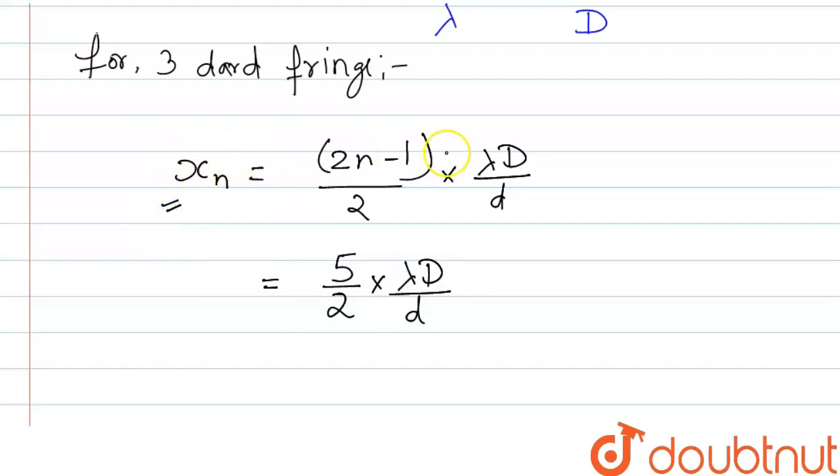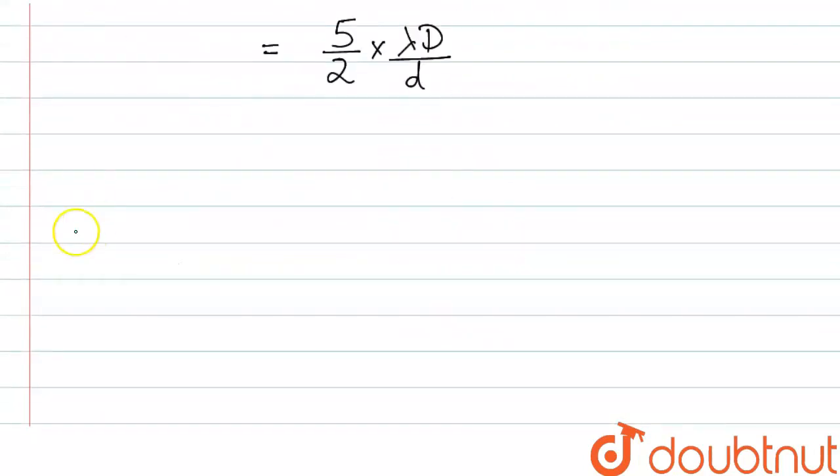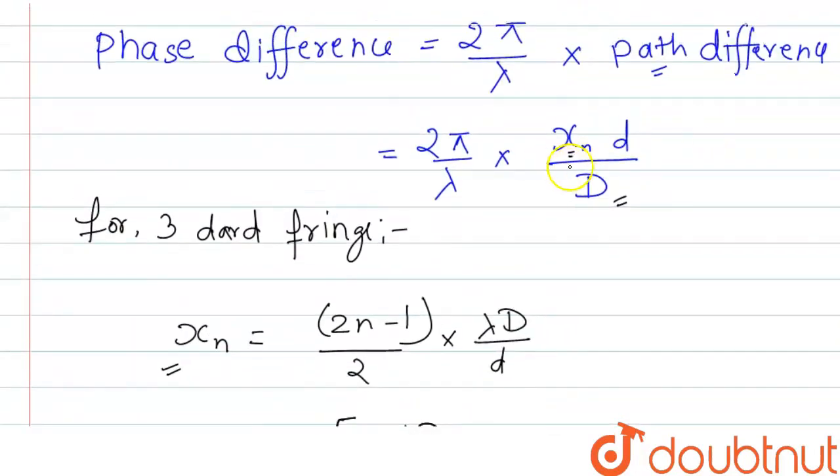Now, we will substitute this value in this formula. Then, the phase difference will be 2π/λ into d/D.